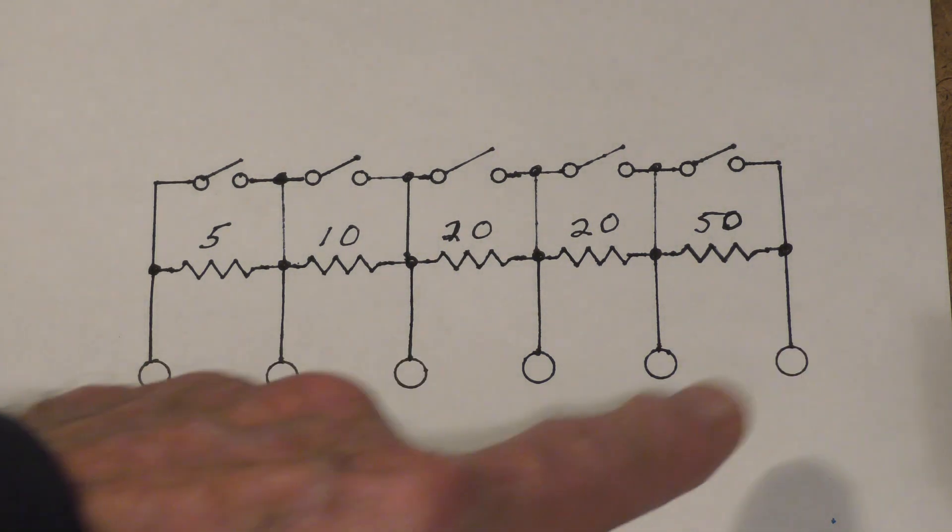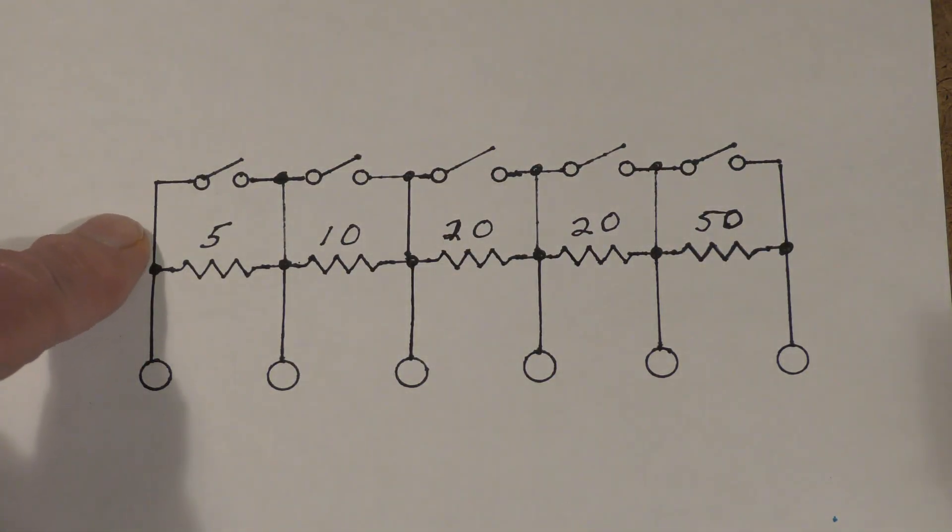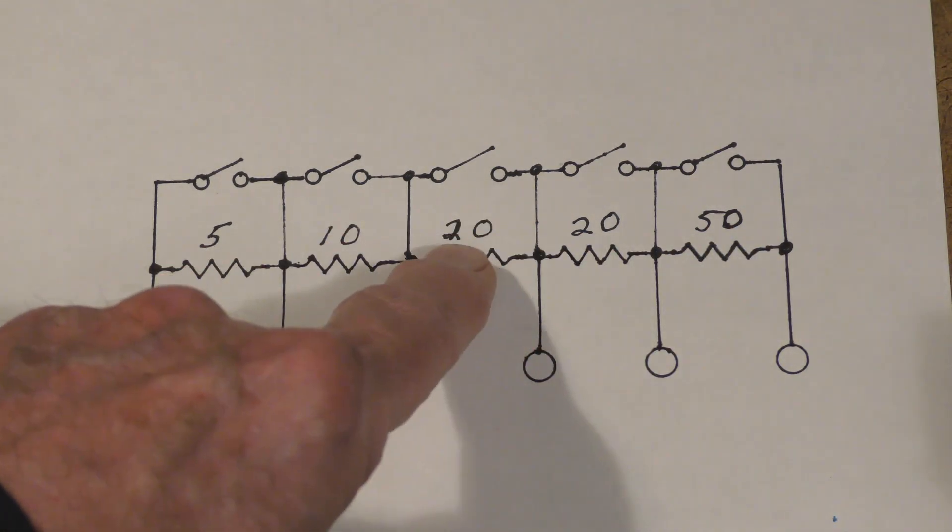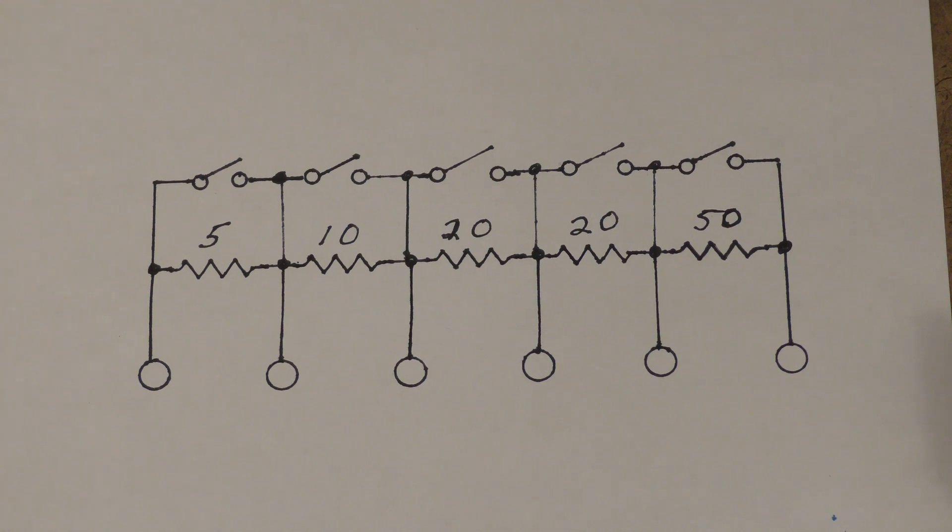You can adjust it to anything from zero ohms with all the switches closed, up to—I think it's 105. If you add all these up: 50 and 40 is 90, 100, 105 ohms. These are 50-watt resistors.